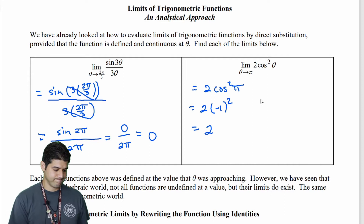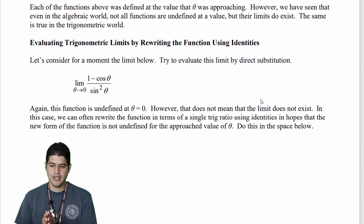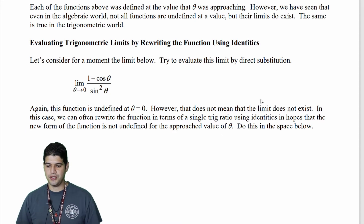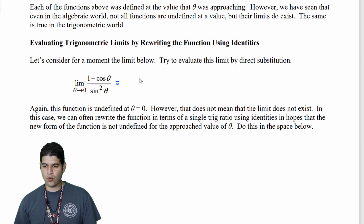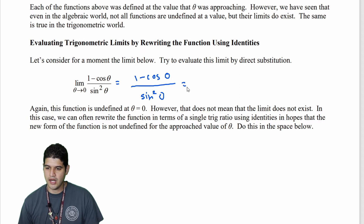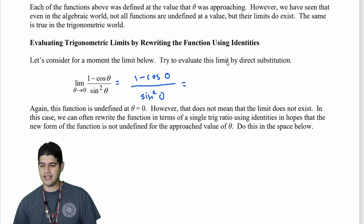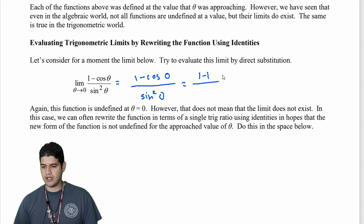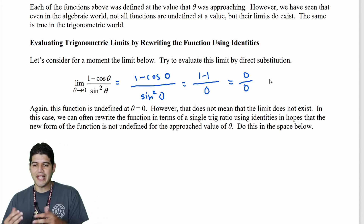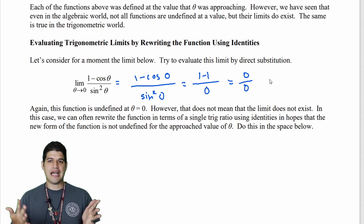Let's switch it up. Consider the limit as theta approaches 0 of (1 − cos θ) over sin²θ. Trying direct substitution: (1 − cos 0) over sin²(0). Cosine of 0 is 1, so the numerator is 1 − 1 = 0. Sine of 0 is 0, so sin²(0) = 0. We get 0/0, which is the indeterminate form. That tells me I haven't done something wrong — I just need to bring other strategies into play.